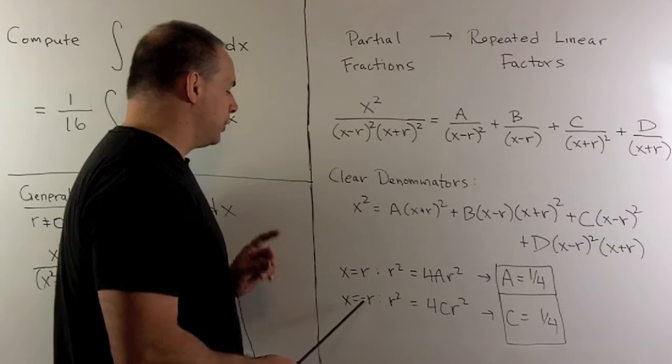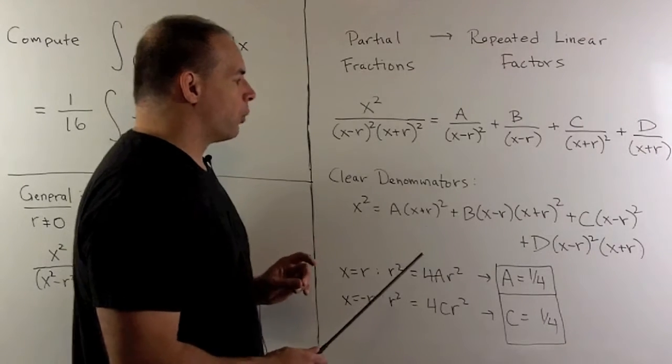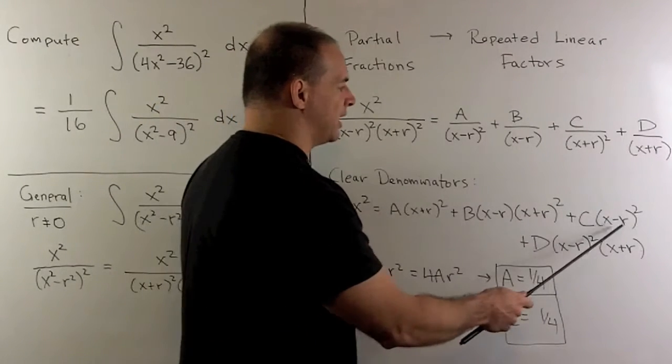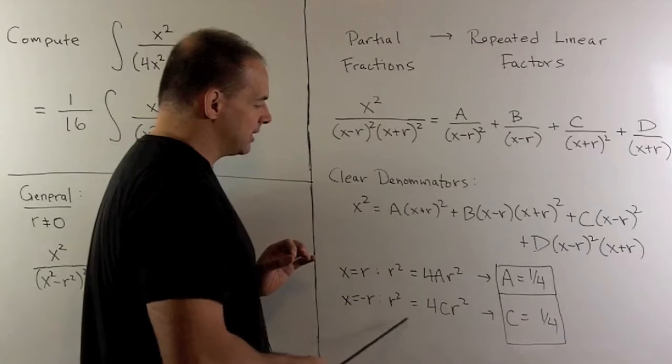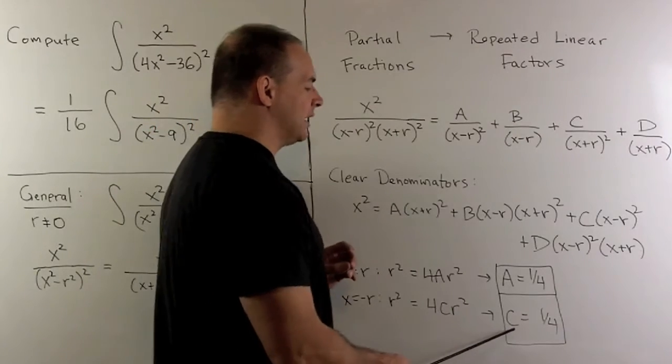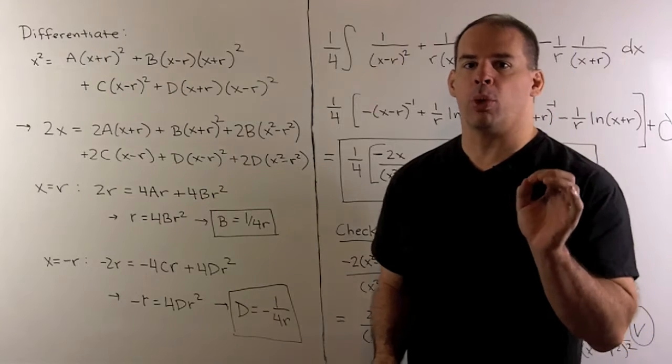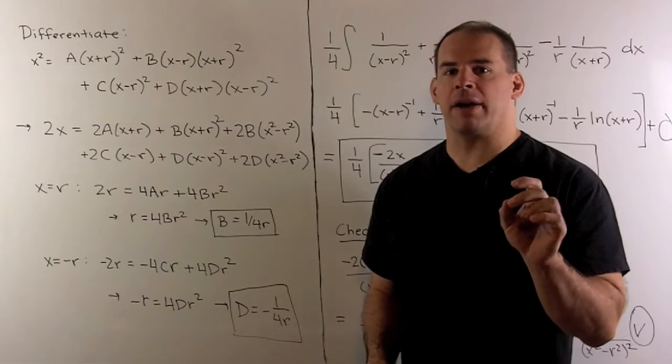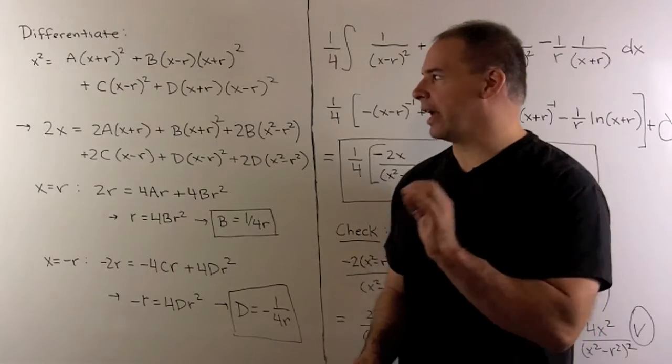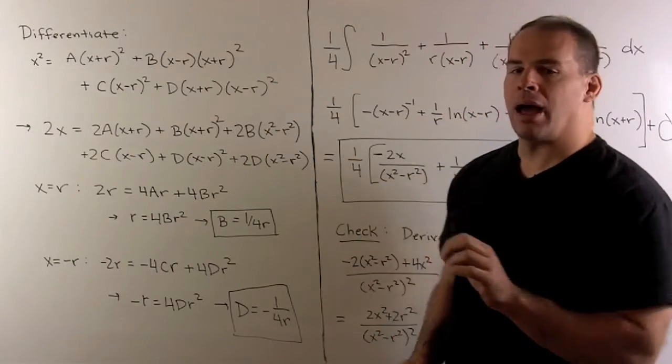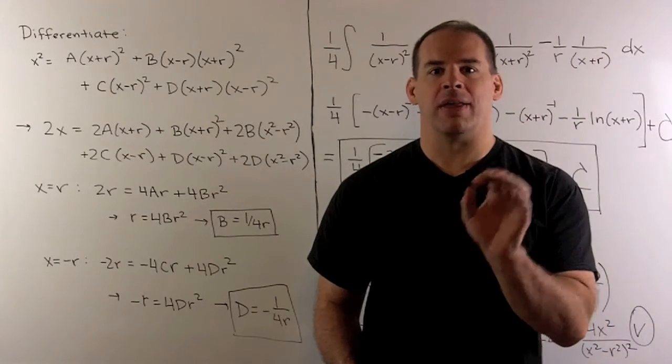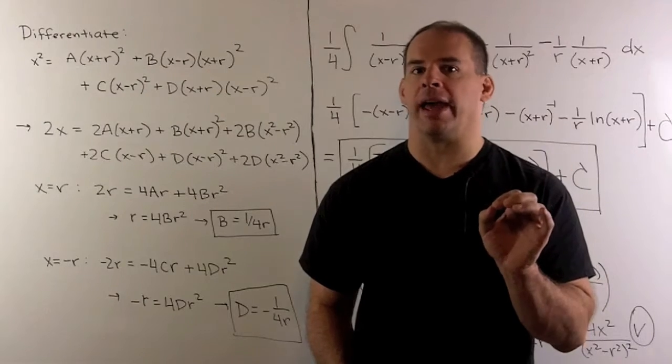Likewise, I'll let x be equal to minus r. We're going to lose all terms but the one with the c. And that gives us the same general equation: c equal to 1 fourth. Here's the important part: instead of trying to find another two points to evaluate to get b and d, I want to differentiate our equation and then try r and minus r again.